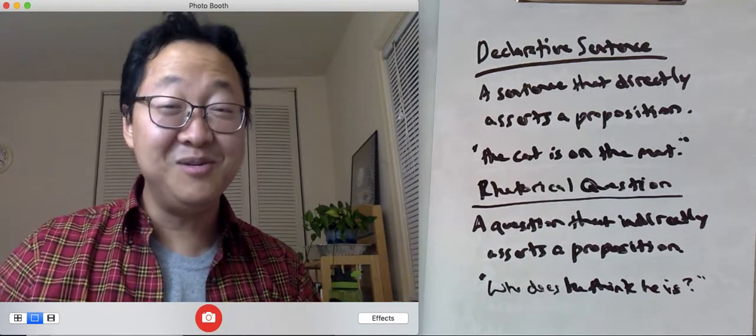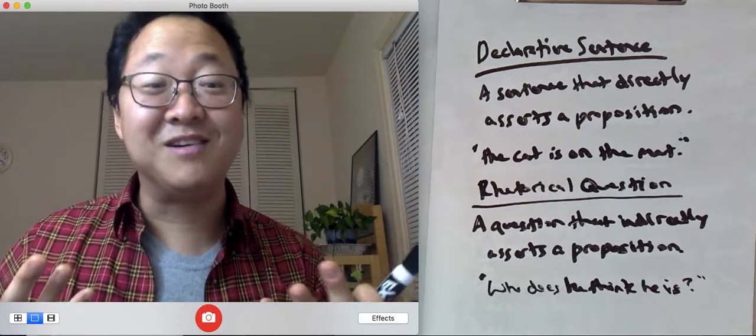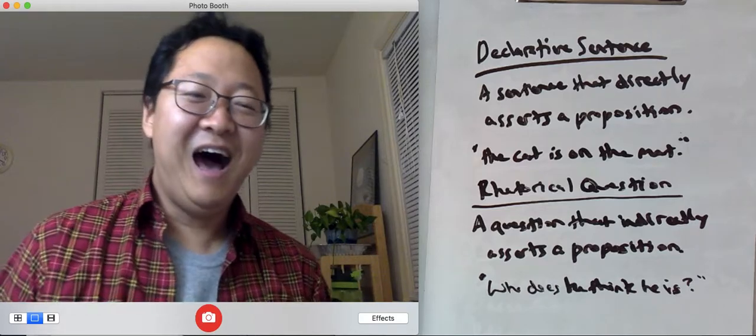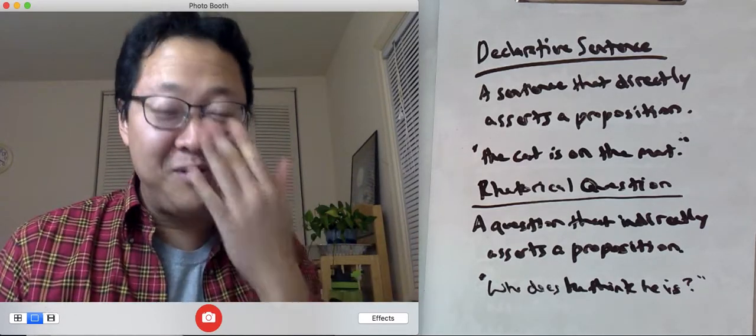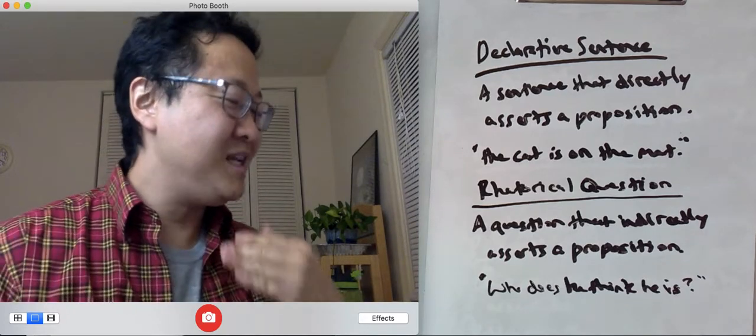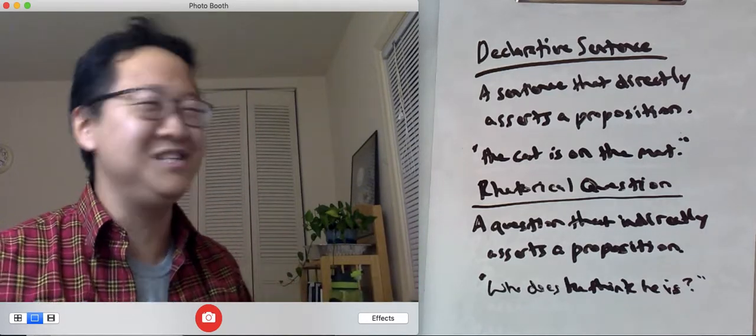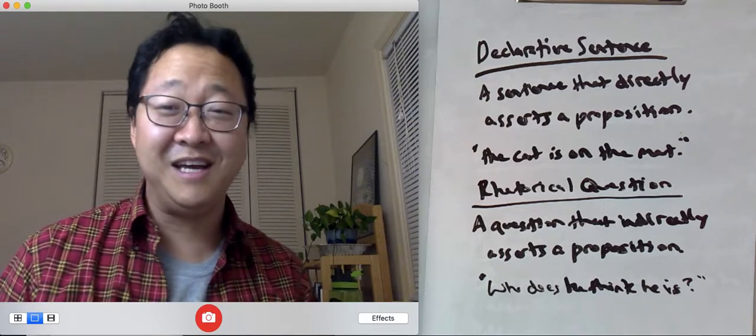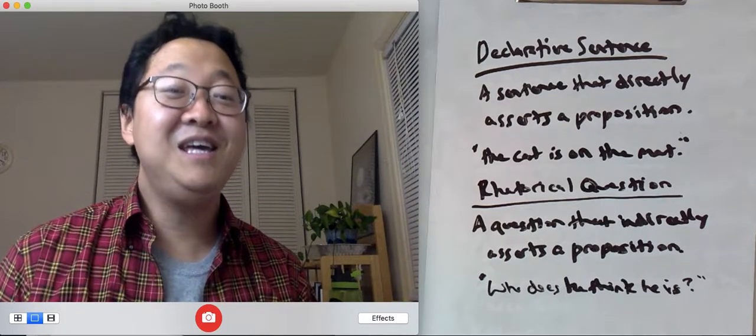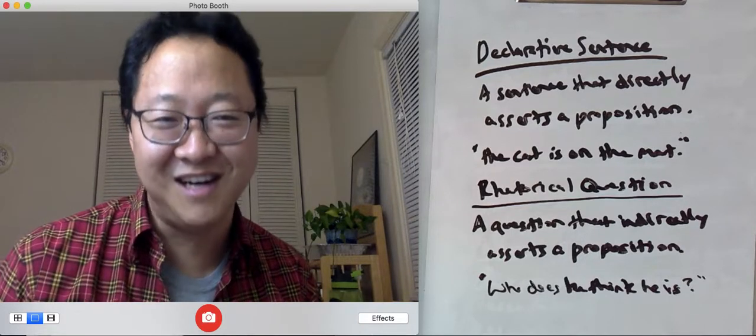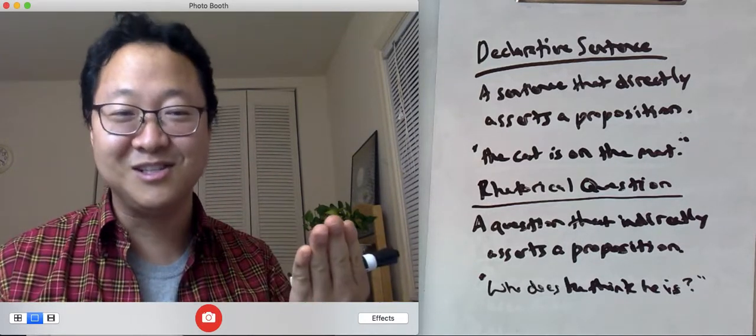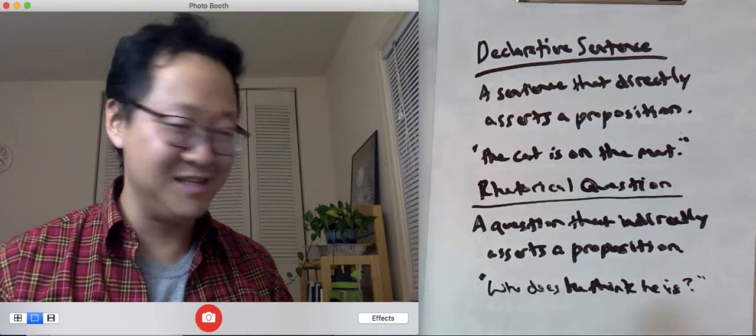Now, when you ask that, you might actually be wondering who he thinks he is. But I don't think that's what we're often saying. We're actually indirectly asserting a proposition. We're really saying he thinks that he's more than he actually is, or he thinks he's all that when he's not. That's what we're indirectly asserting with this rhetorical question.